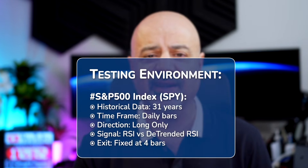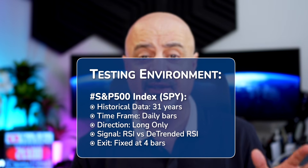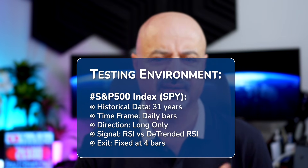Quick context before we go any further: I am doing this test on the S&P 500 index using the SPY ETF because I have a long history of this instrument — about 31 years. Also, this instrument has a huge upward drift, so this de-trending will really show the value if there is any value. I am using a fixed number of bars to exit, same threshold to enter, same look-back history.